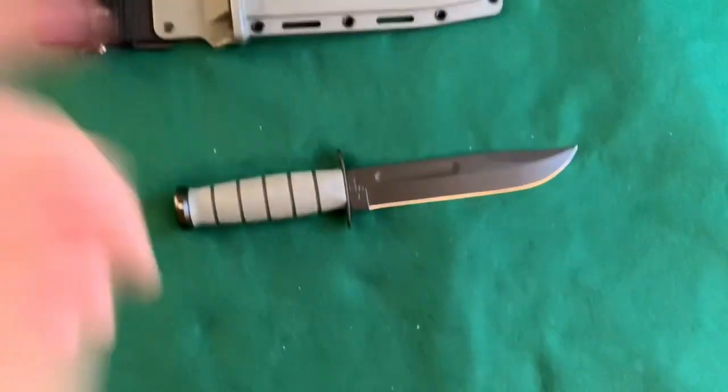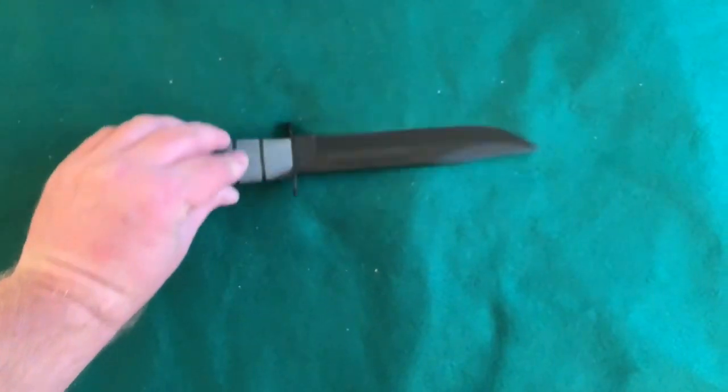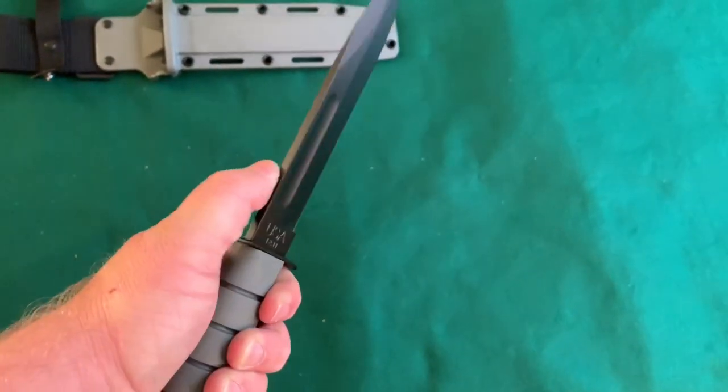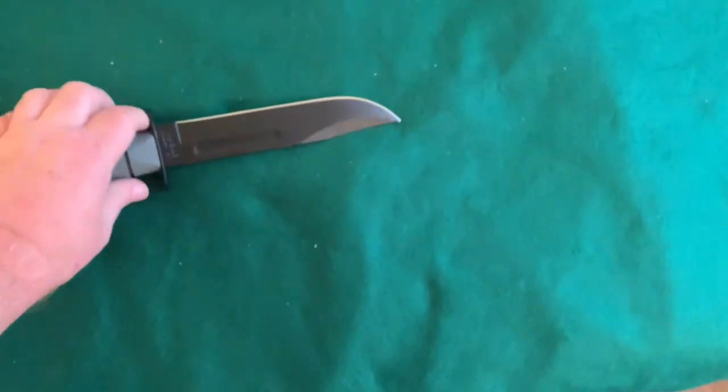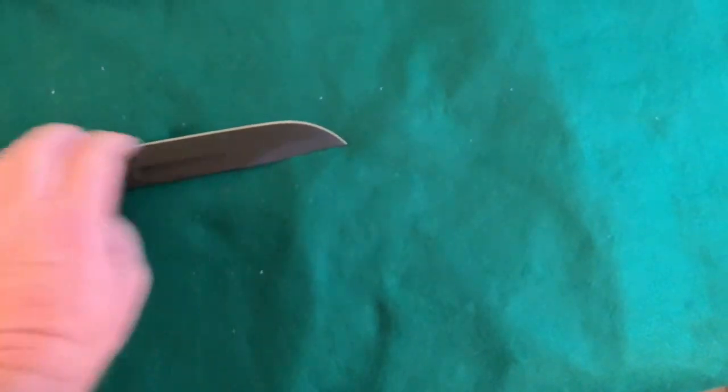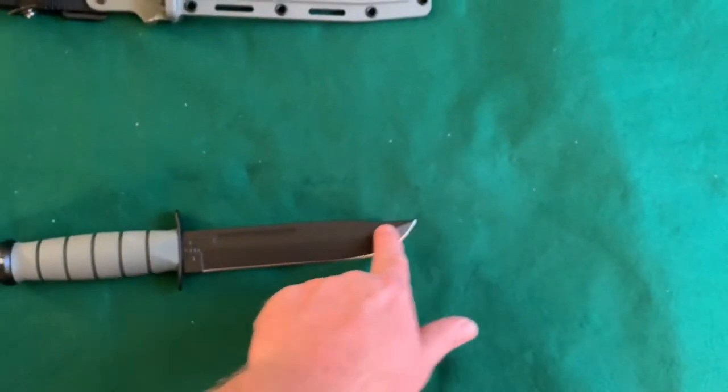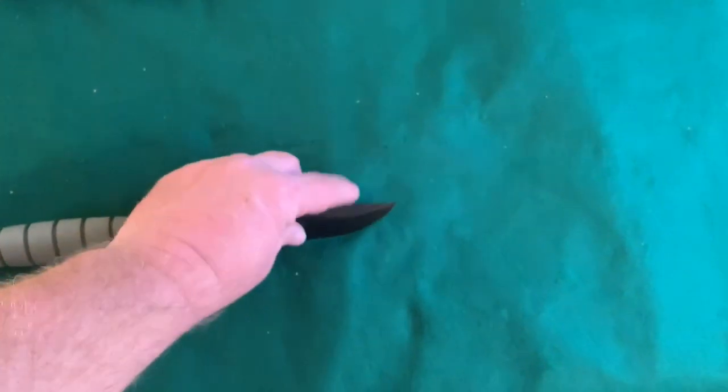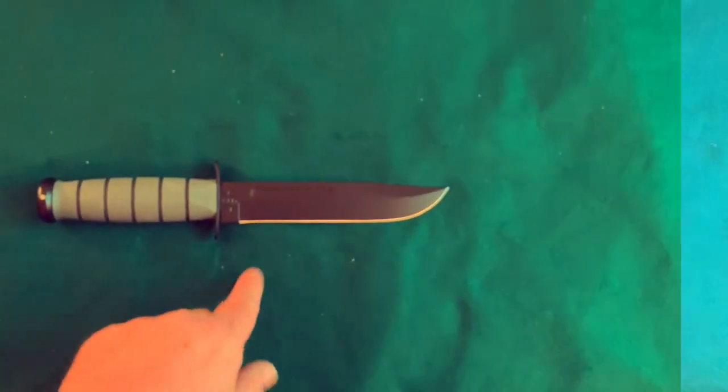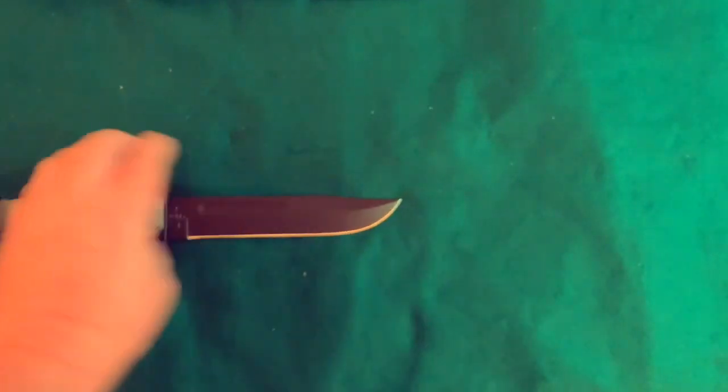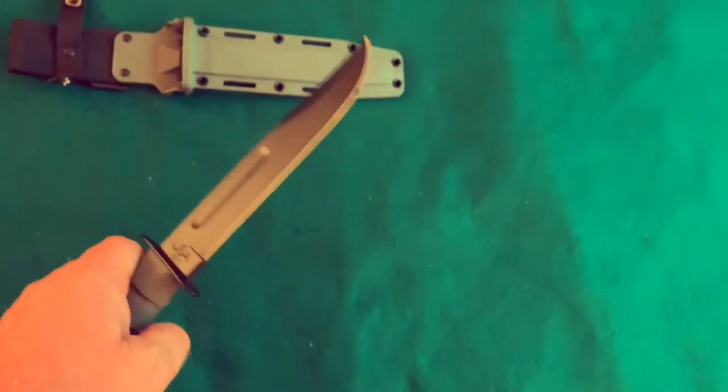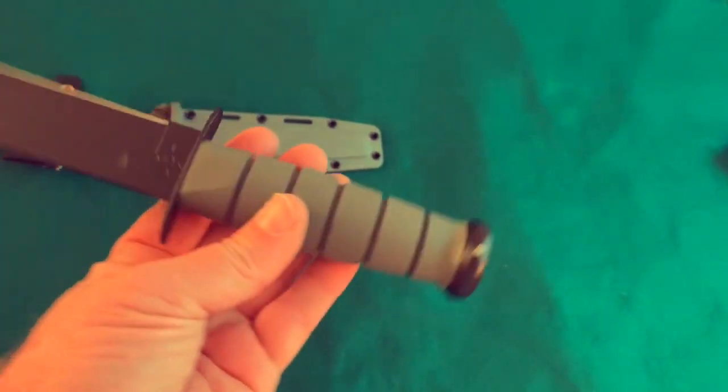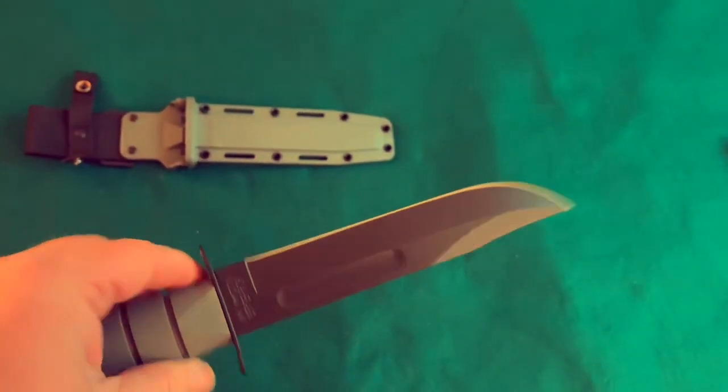It's got a fuller in it, probably to reduce the weight a little bit. Some people like to call them blood grooves, but I don't think that's really a blood groove. It's got a swedge on the top but it's not sharpened. I believe the original K-bars from World War II were sharpened, and you could sharpen this, but it arrives not sharp on that swedge. The blade itself though - yeah that's sharp, you can tell it's sharp.